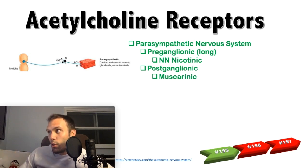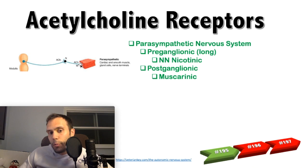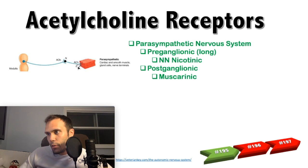So the acetylcholine synapses at an NN nicotinic receptor, because we're in the autonomic nervous system. Then the post-ganglionic neuron goes on to bind to a muscarinic receptor, where again it uses acetylcholine, but this is a GPCR receptor — so it's a little bit different.